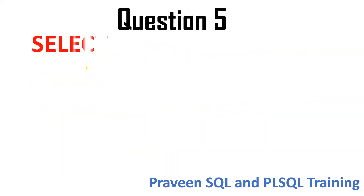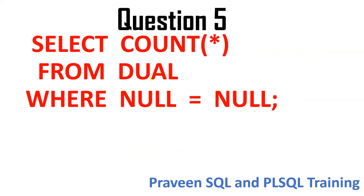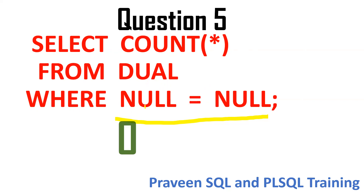The fifth question: SELECT COUNT(*) FROM dual WHERE null = null. Again the null concept — nulls are very important. One null cannot be equal with another null because null is no value. How can we make it equal? It is not correct. So the answer will be 0, because the condition is not matched — one null cannot be equal with another null.